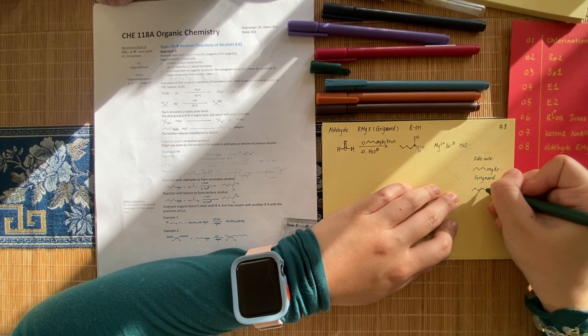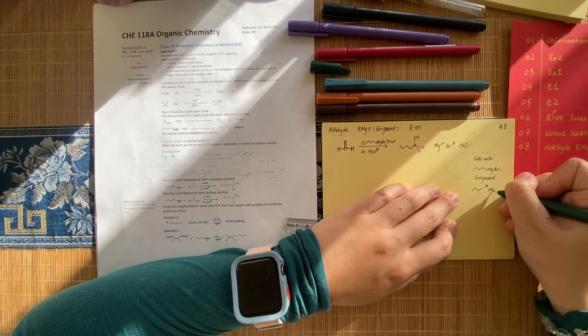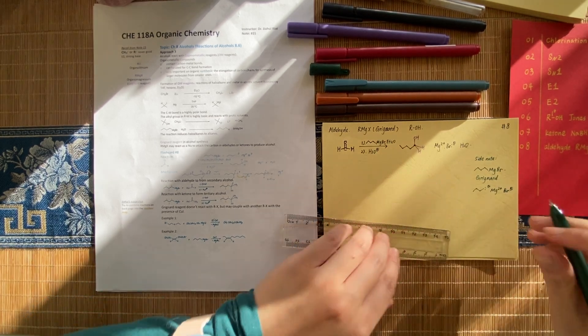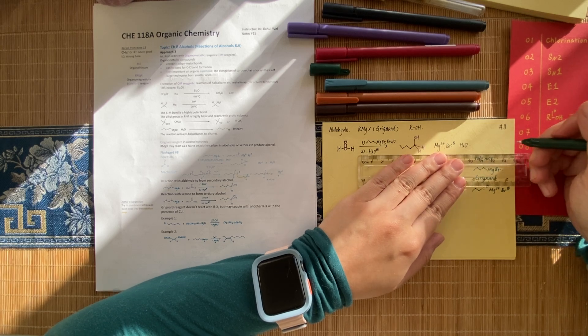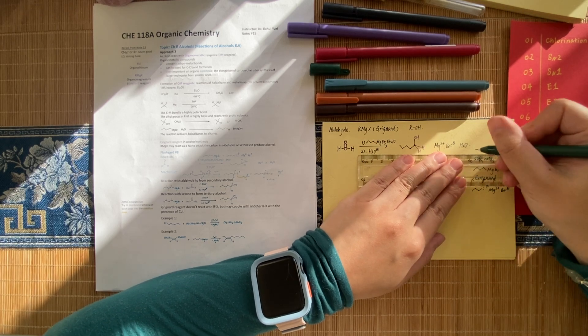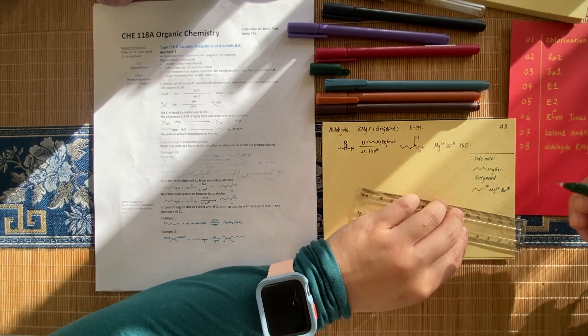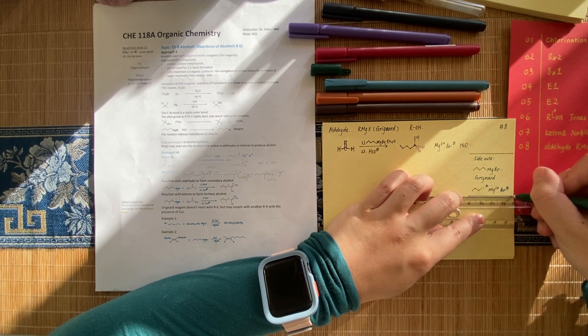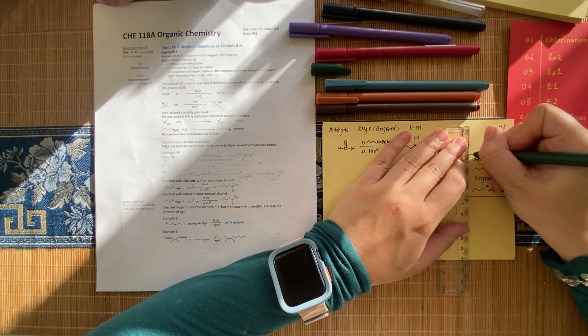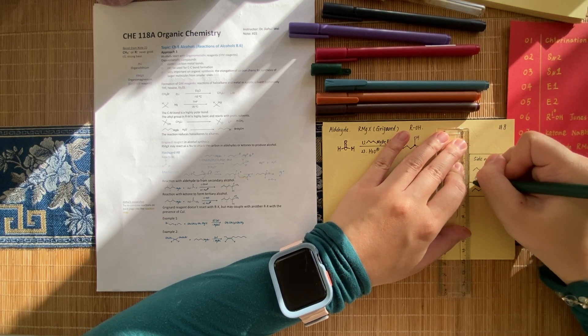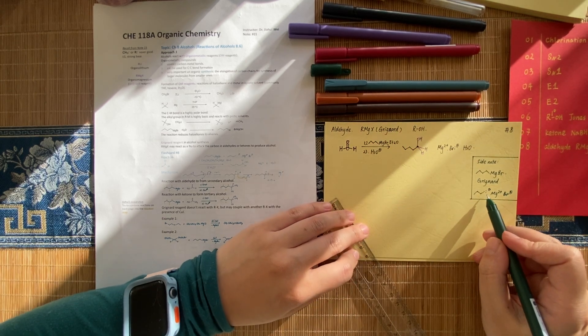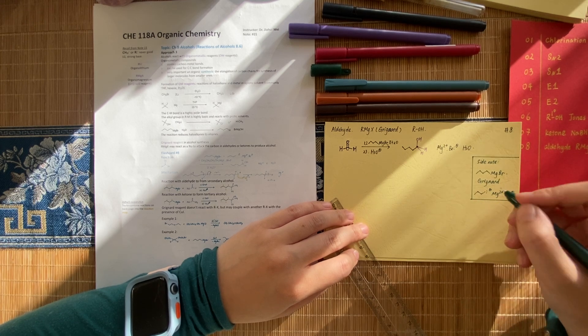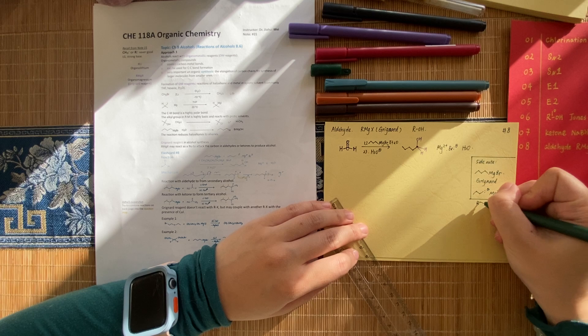It's Grignard reagent. It works the same as here. Mg2+ Br-. It's not part of the mechanism game, but you are supposed to know that. The real part that is playing the game is this R minus. So it works the same as R minus.